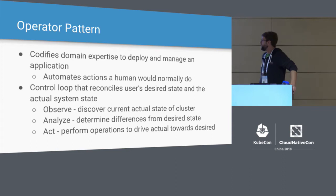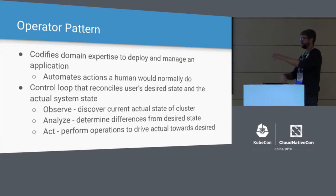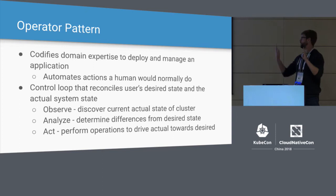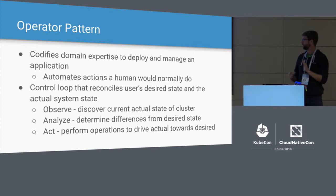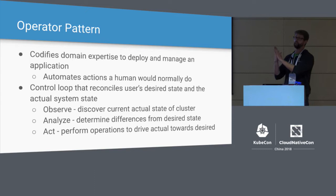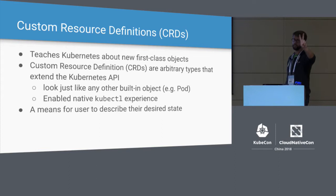The three steps all operators use: first, they observe what the state of the system is — using the Kubernetes API to ask what a pod is doing, whether it's healthy, how many replicas are running in a stateful set. Then they analyze to see what's actually happening versus what the user has said they desire. What's the difference between actual and desired? Then the operator takes steps — this automated software performs operations to make the actual state move toward the desired state, ensuring what the user wants is actually happening in their cluster.